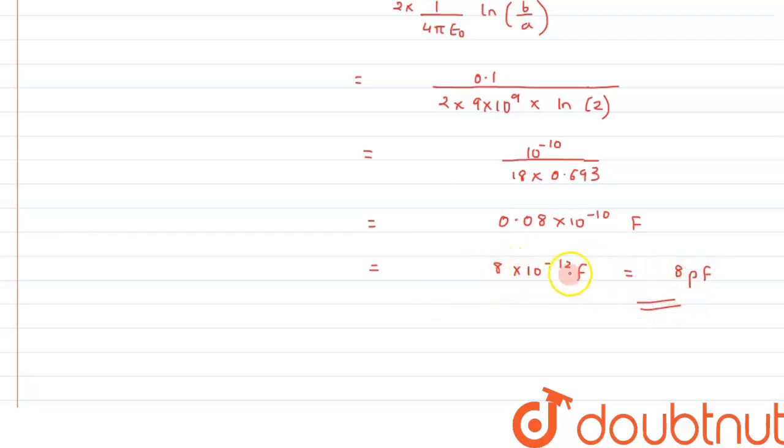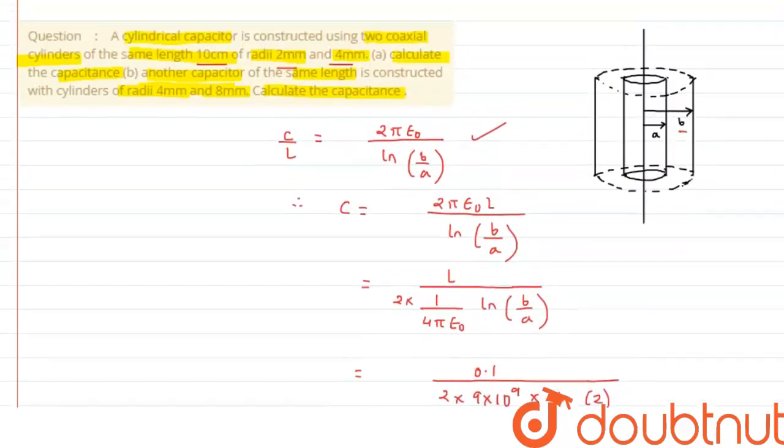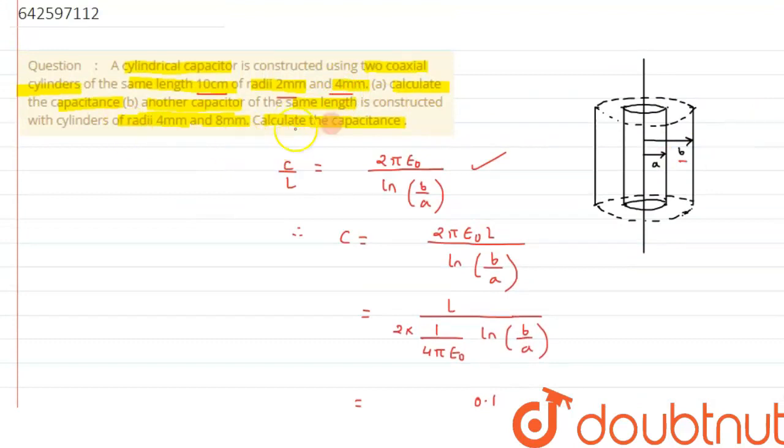Because we know 1 into 10 raised to minus 12 Farad is 1 picofarad. So this is the answer to the first part of the question. For the second part we are interested in finding the capacitance value for radii 4 mm and 8 mm.